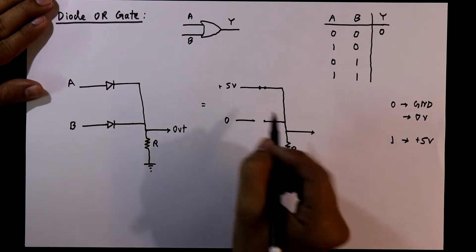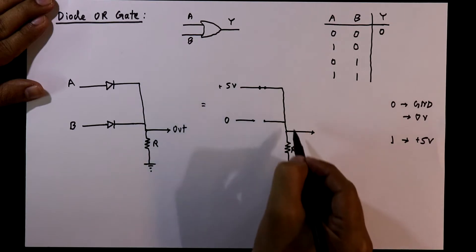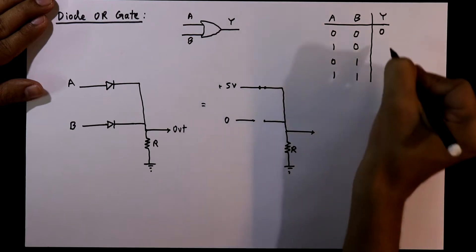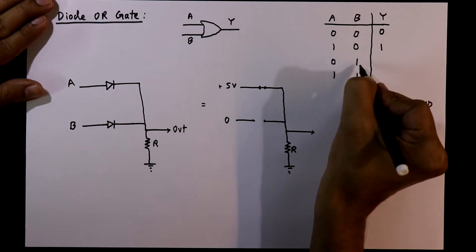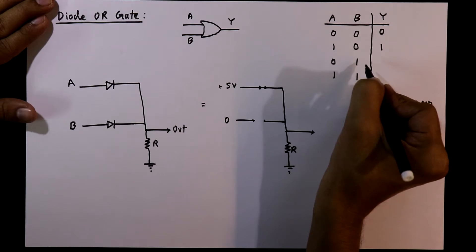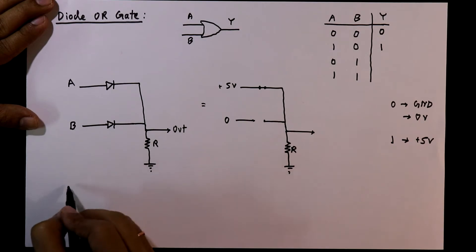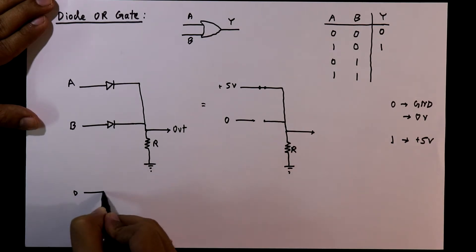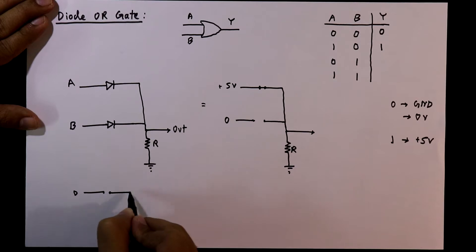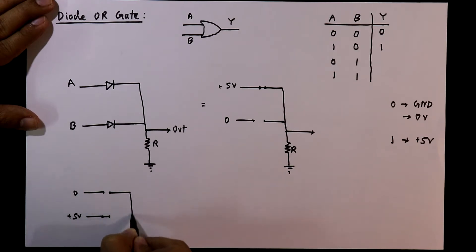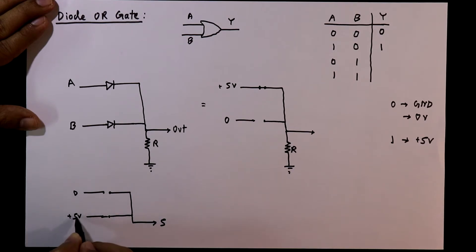At this point we will get five volts, so for the second condition the output is five volts, meaning one. For the third condition, A is zero volts so its diode is in open circuit. For B it is five volts, so this diode is working as a closed circuit and we will get five volts at the output point.